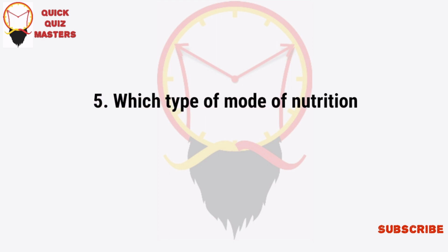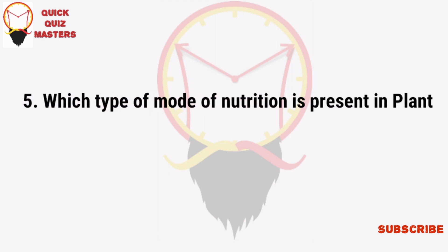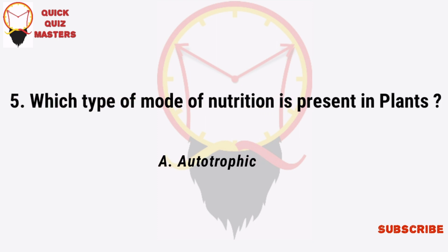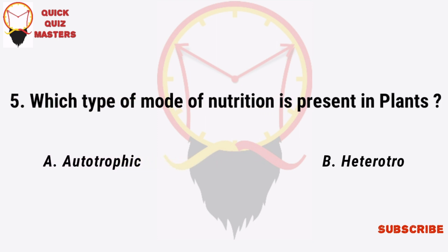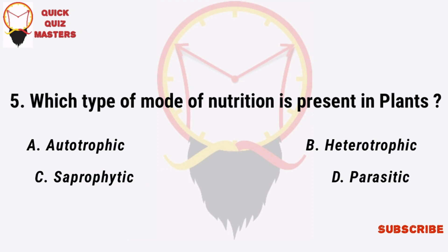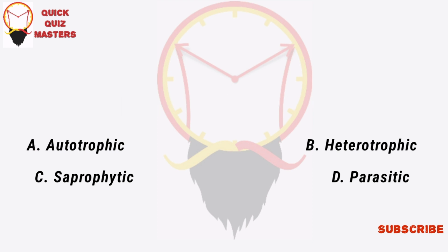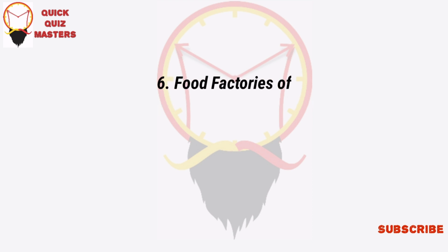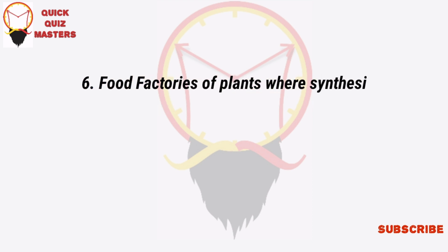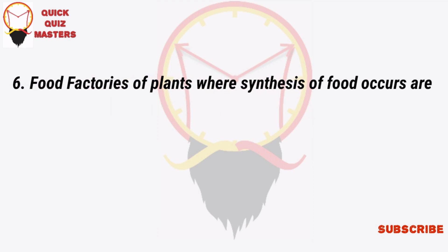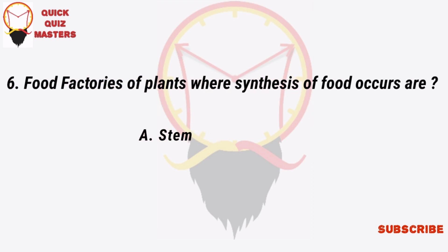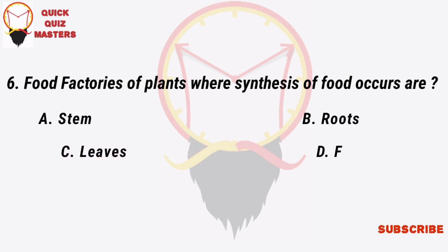Which type of mode of nutrition is present in plants? Autotrophic, heterotrophic, saprophytic, parasitic. The sites of food synthesis in plants are: stem, roots, leaves, flowers.